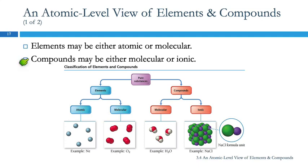We just were talking about how compounds can be molecular with covalent bonds or ionic with ionic bonds. Elements, most of them are atomic, but a few of them have molecules.